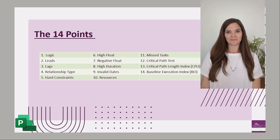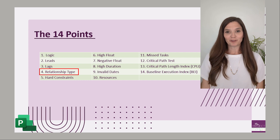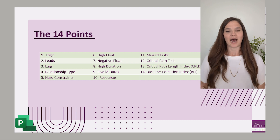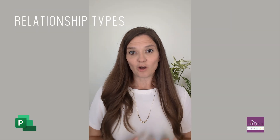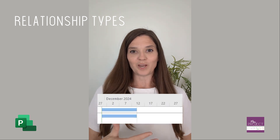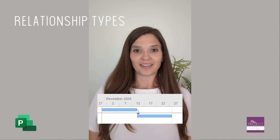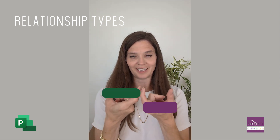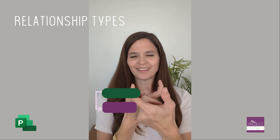The fourth DCMA point assessment is relationship types. We talked about logic, which has successors and predecessors — every task has to have a relationship, but that relationship can be defined differently. Finish-to-start is the most common and is the default when you first link a task. You can change that to say both tasks start at the same time — that's a start-to-start relationship.